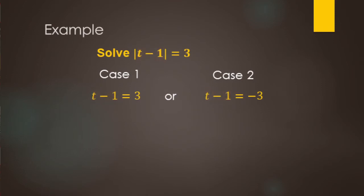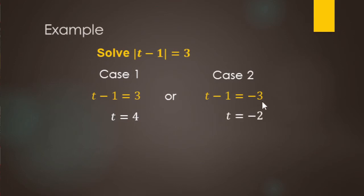What's inside the red box is t minus 1. So we set up two cases: t minus 1 equals 3, and t minus 1 equals negative 3. For case 1, add 1 to both sides: t equals 4. For case 2, add 1 to both sides: t equals negative 2. Checking: 4 minus 1 equals 3, and negative 2 minus 1 equals negative 3, whose absolute value is positive 3. Both work. Our solutions are negative 2 and 4.